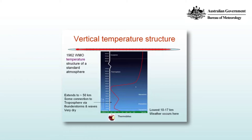That energy is transferred to the thin layer of the atmosphere just above the surface by conduction — that is, direct thermal contact. Then thermal mixing and turbulent motion mix the heat through the troposphere, so the temperature decreases with height. It's in the troposphere where the weather occurs, and so it's that region of the atmosphere that we're most interested in.